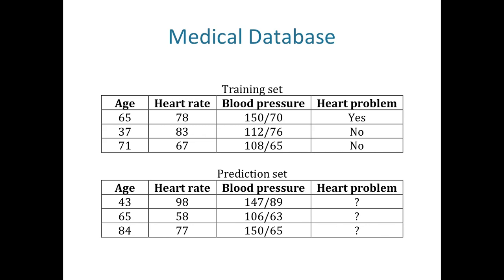As in any classification or prediction problem, we have a training set in which we have the labels. Take a look at the heart problem column — in our training set, we have information for each patient and also the label regarding whether the patient has a heart problem. Then we have a testing set in which we do not have that information. This is a typical hospital setting where we build our classifier based on patients we have seen, and when a new patient comes in, we run the classifier to understand whether that person might have a heart problem based on patterns learned from previous patients.